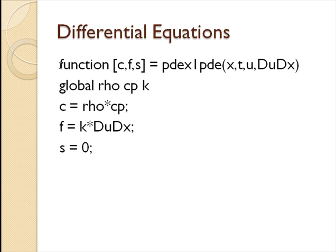Here's how this works. We have to define this function pdex1pde. It depends on x, t, u, and du/dx. c I just define as rho C_p. f as k times du/dx. See, du/dx is sent here so we can just use it directly. And then s is zero. And all I had to do was use a global function to get these rho C_p and k inside here.